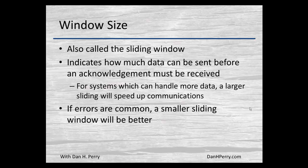It would be as if I said 'hello' and you had to say 'okay,' then I said 'how' and you say 'okay,' then 'are' and you say 'okay' — after every word our conversations would be really slow. So the window size basically says you can send several words before I have to acknowledge. I could say 'hello how are you today — okay' and 'how's the weather today — okay.'